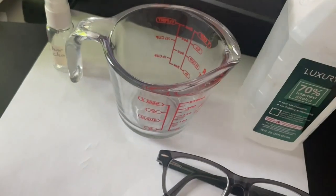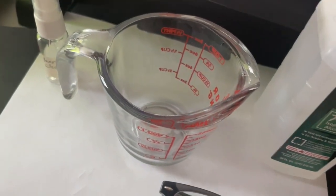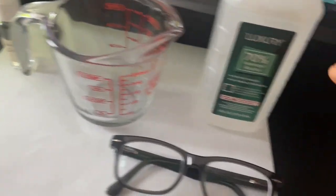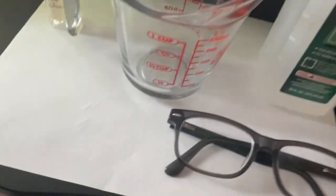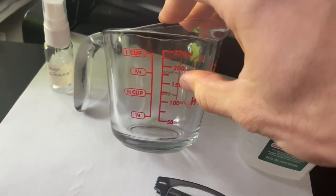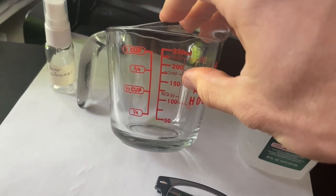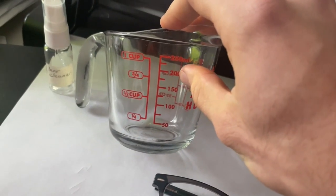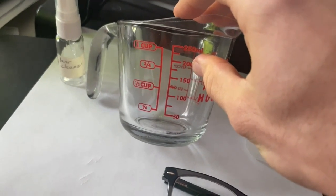And so the mix that you'll be doing is three to one alcohol to water. So basically what I'm going to do is I'm going to fill this up to 150 milliliters with the rubbing alcohol and then the last 50 I will do with water.